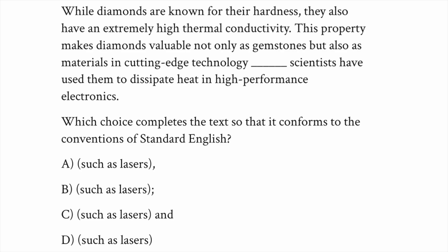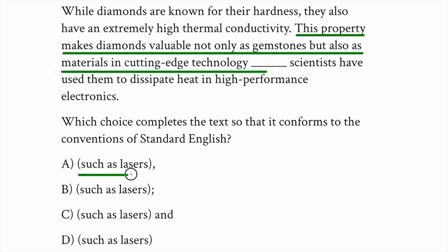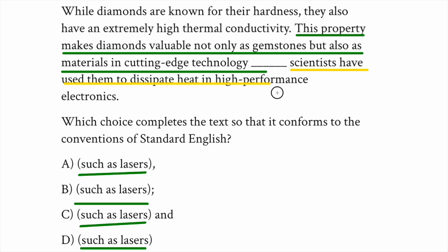But hard punctuation doesn't have to be a period. Looking at this example, focusing on the sentence with the blank: 'This property, hardness, makes diamonds valuable not only as gemstones but also as materials in cutting-edge technology such as lasers. Scientists have used them to dissipate heat in high-performance electronics.' That's an independent clause including the parenthetical, and then another independent clause starting with 'scientists.' So we need hard punctuation. We've got soft — just a comma, just 'and,' and nothing. So the hard punctuation answer is correct.